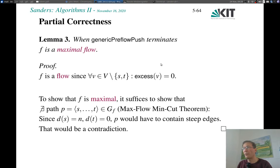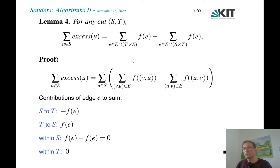Partial correctness is easy, but now we must prove termination and running time, which is more complicated. We'll approach this by first proving a string of further lemmas.